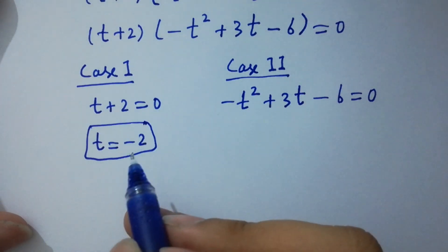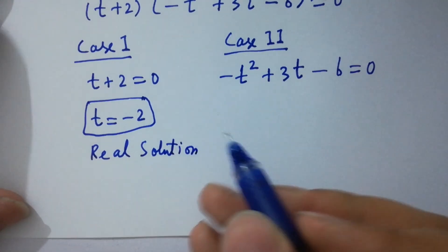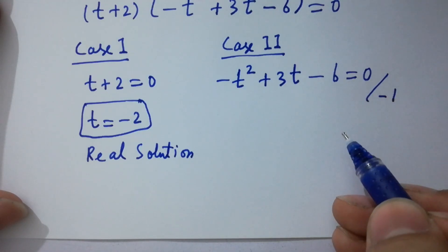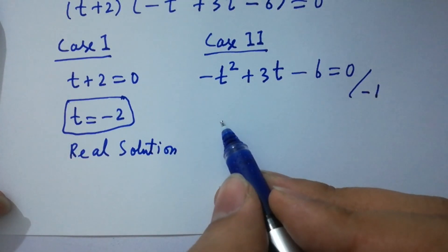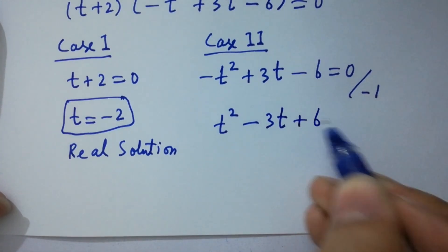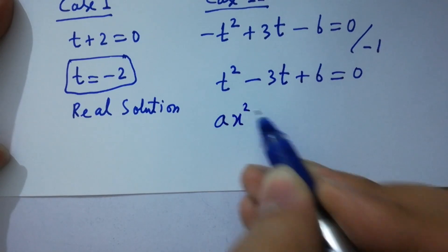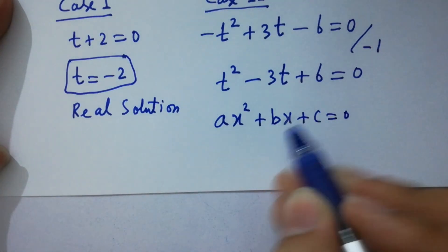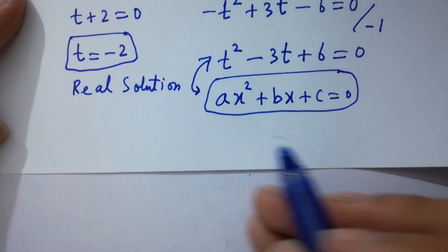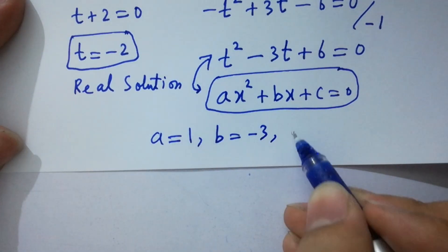From case 1, t equals minus 2, which is our first real solution. And here we have a quadratic equation. If we divide by minus 1 on both sides, we get t squared minus 3t plus 6 equals 0. This is like a quadratic of the form ax squared plus bx plus c equals 0. By comparing, we have a equals 1, b equals minus 3, and c equals 6.